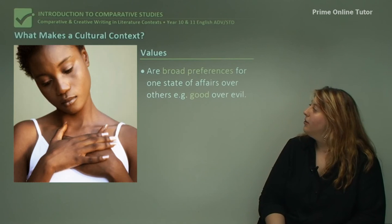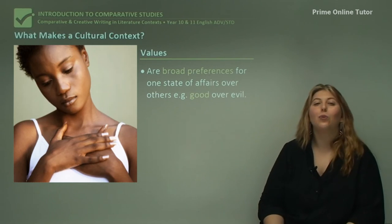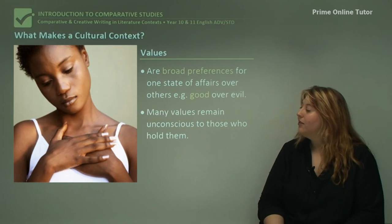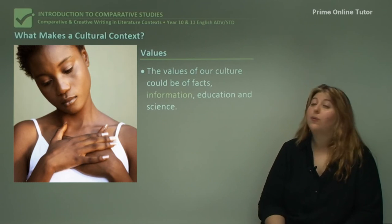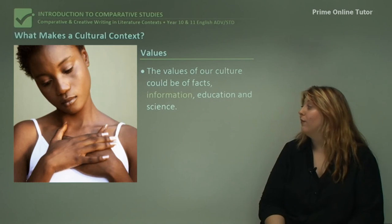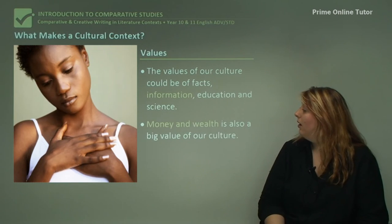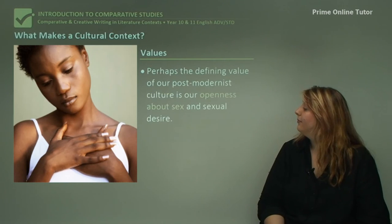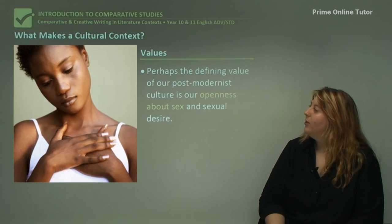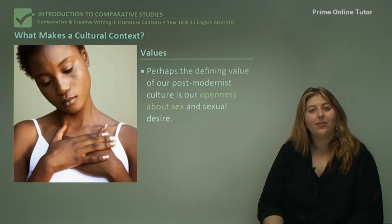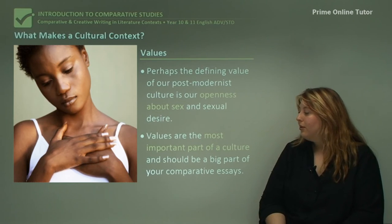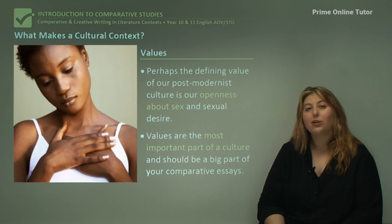The most important element is values — broad preferences for one state of affairs over another, such as liking good over evil. A lot of values are unconscious even to those who hold them; you might not have made a list, but a provocative question will make them obvious. In modern culture, values might include facts, information, education, science, and wealth. One of the more defining values of our postmodern culture compared to 30 or 40 years ago is the openness about sex and sexual desire — used much more in advertising. Values are the most important part of a culture and you can't really do a comparative essay without mentioning the term.